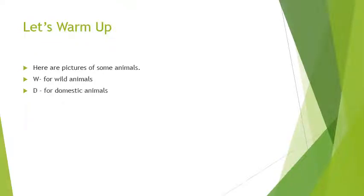Let us start with the let's warm up. In this let's warm up there are some pictures of the animals and you have to identify to which category do these animals belong. W stands for wild animals, D stands for domestic animals, and P stands for pet animals.